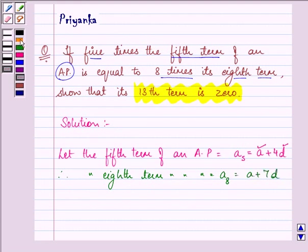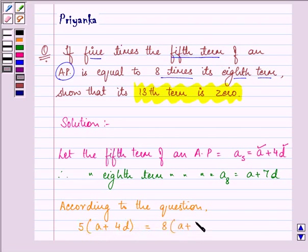Now we will be writing down the equation according to the question. It is given to us, 5 times the 5th term is equal to 8 times the 8th term.